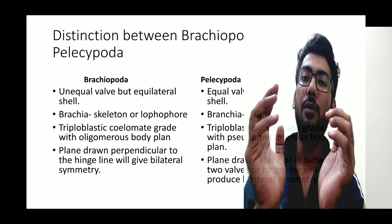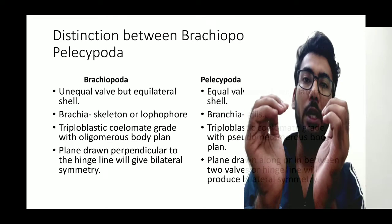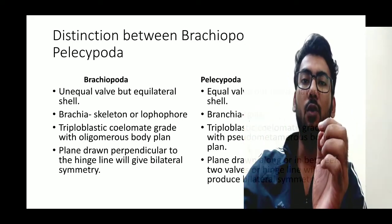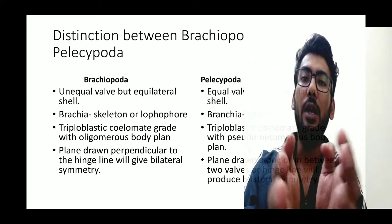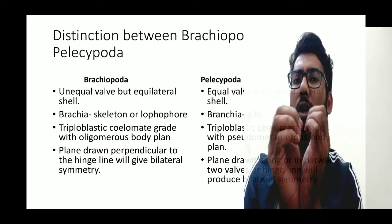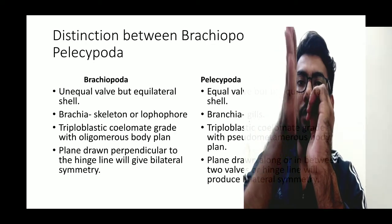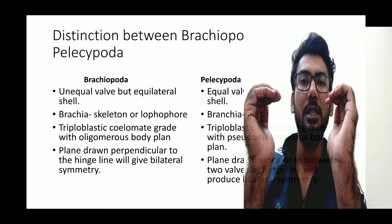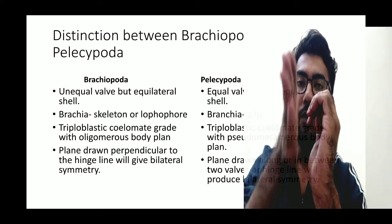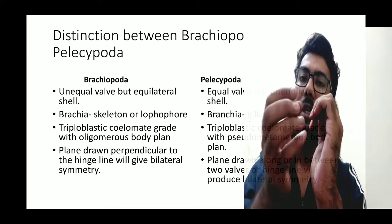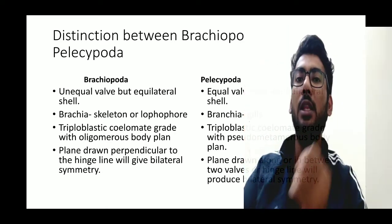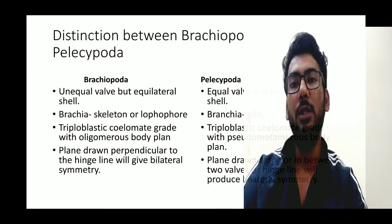In Pelecypoda, the two walls are equal — that is why it is called bi-valve — but the walls are unequilateral, meaning all sides are not equal. The key difference: Brachiopoda has unequal but equilateral walls, whereas Pelecypoda has equal but unequilateral walls. In Pelecypoda, bilateral symmetry is obtained by passing a plane along or in between the two walls, along the hinge line.